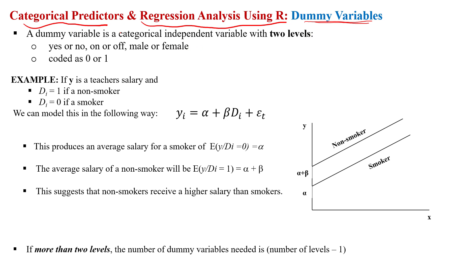For example, if we have a two-level category of a variable such as male or female, on or off, yes or no, defective or non-defective, then we can code that particular variable as 0 or 1 as a dummy variable.